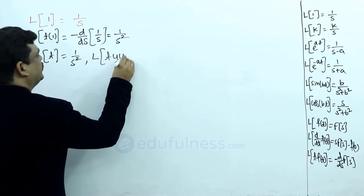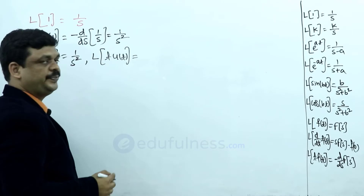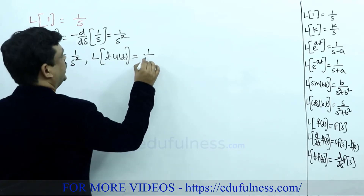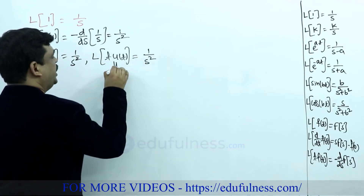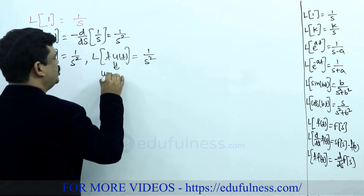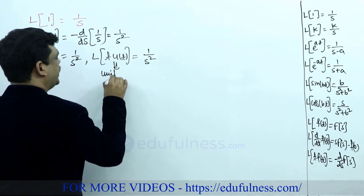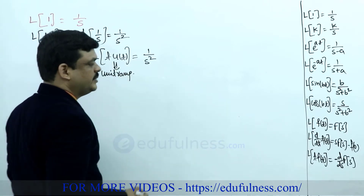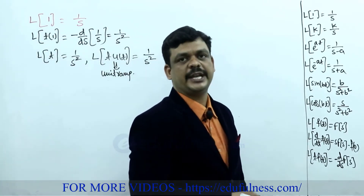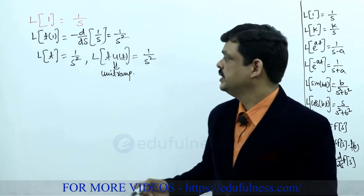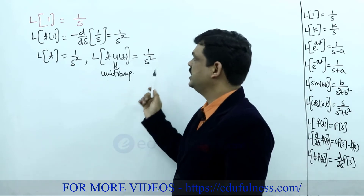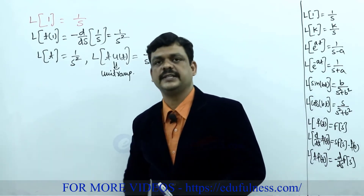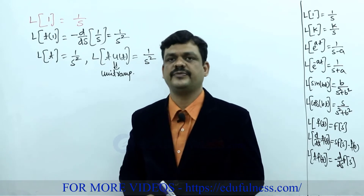This is another standard equation: Laplace transform of t is 1/s², or in bilateral representation, Laplace transform of t·u(t) is 1/s². The signal t·u(t) is also called the unit ramp signal. In signals and systems, these types of signals are called unit ramp signals, so Laplace transform of the unit ramp signal is 1/s².